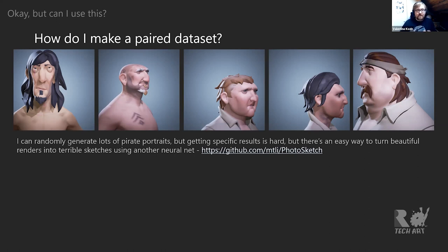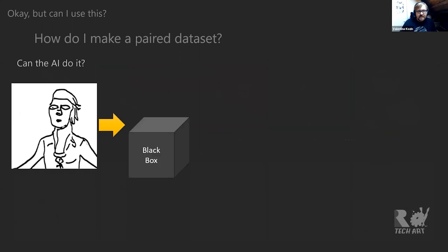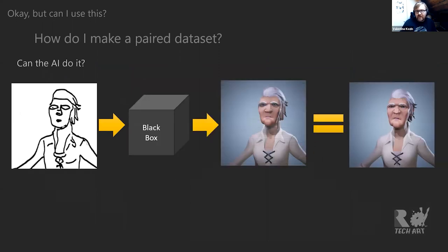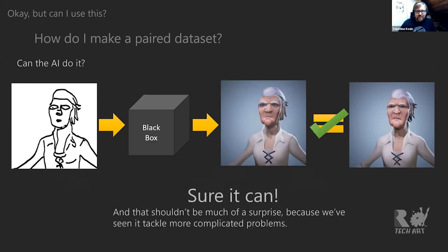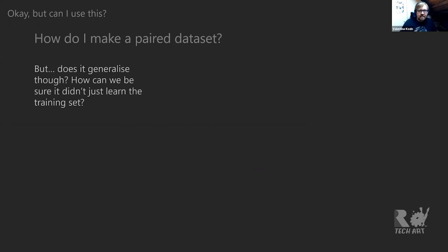So here's an actual example using pix2pixHD — something I was doing two years ago. Sea of Thieves has a character creation system called the Infinite Pirate Generator. We have a bunch of defined boundaries for different parameters and just generate randomized pirates based on those boundaries. It's easy to generate thousands of pirates but getting specific results is hard. I found another neural network — a photo-to-sketch converter — to convert these pirate portraits rendered out of Unreal into really rough sketches. The question was: can I train pix2pixHD to go from horribly bad pirate sketches to actual Sea of Thieves pirates?